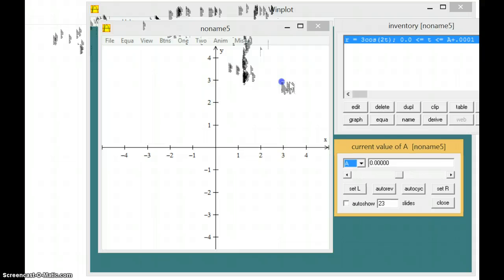So you put in a number, 0, set that to the left. And then put in 2 pi, set that as a right. And we're good to go.